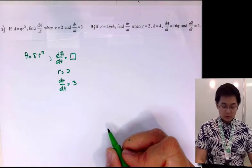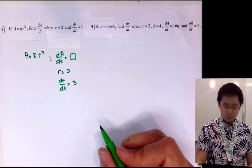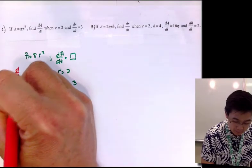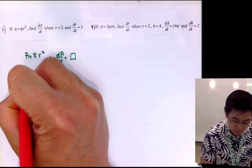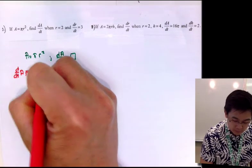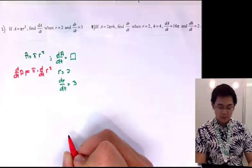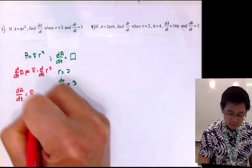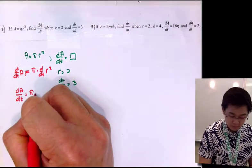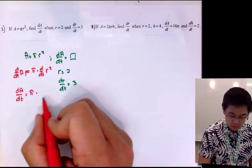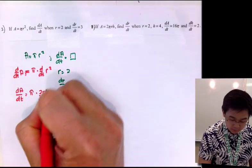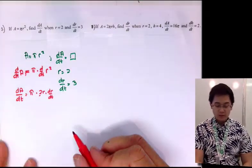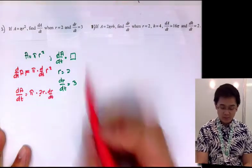In implicit differentiation, we are always differentiating with respect to time. Taking the derivative of A with respect to time gives us dA/dt equals pi times the derivative of r squared with respect to time. Since pi is a constant, we keep it aside, and the derivative of r squared with respect to time gives us 2r times dr/dt.